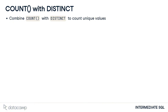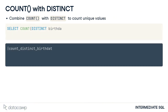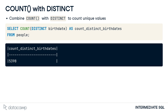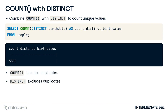Combining COUNT with DISTINCT is also common to count the number of unique values in a field. This query counts the number of distinct birthdates in the people table. This number is different from the birthdate count of 6152 because some people in our table likely share the same birthday. COUNT would include all the duplicates, while DISTINCT counts all of the unique dates, no matter how many times they come up.